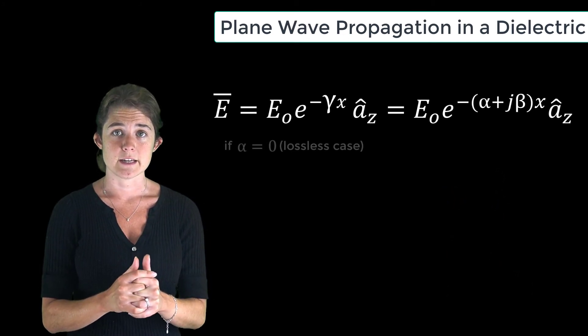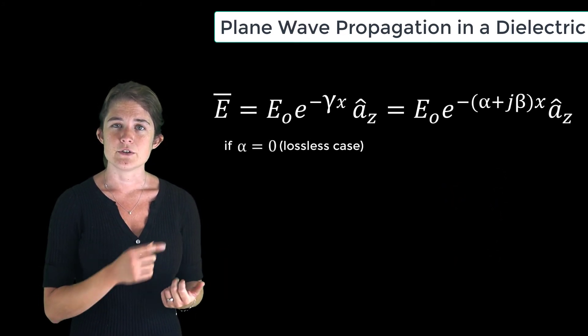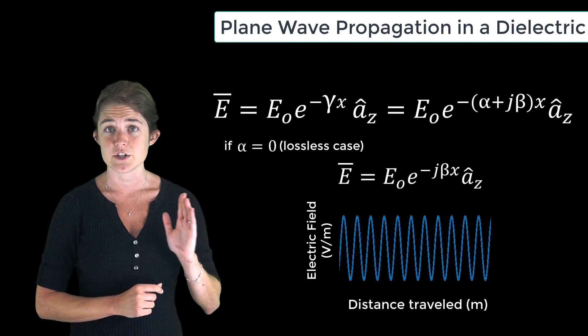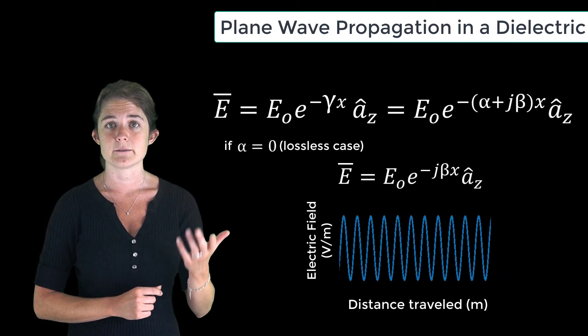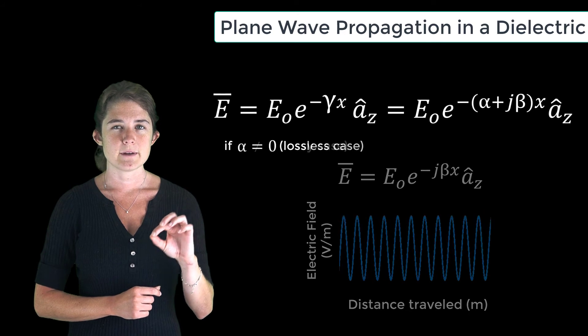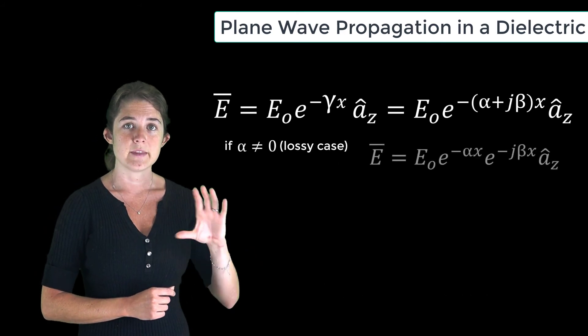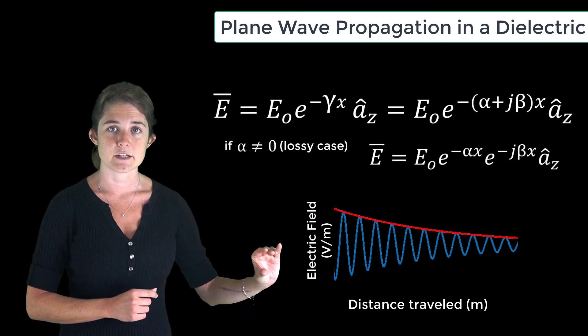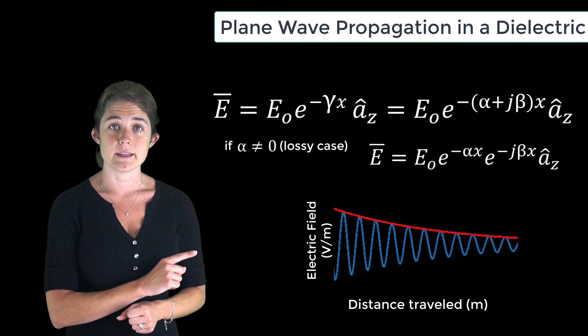So for the lossless case where alpha equals zero, you just have this harmonic term, e to the j beta x, which is a sinusoid of constant magnitude. But if alpha is not zero, then that sinusoid is being scaled by a decaying exponential. That looks like this.